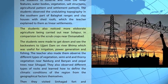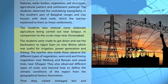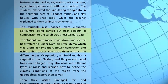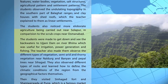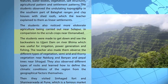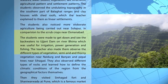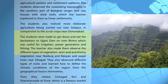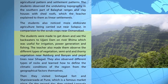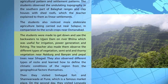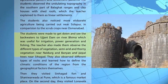The students also noticed more elaborate agriculture being carried out near Solapur in comparison to the scrub crops near Osmanabad. The students were made to get down and see the backwaters of Ujjani Dam on River Bhima, which was useful for irrigation, power generation and fishing.